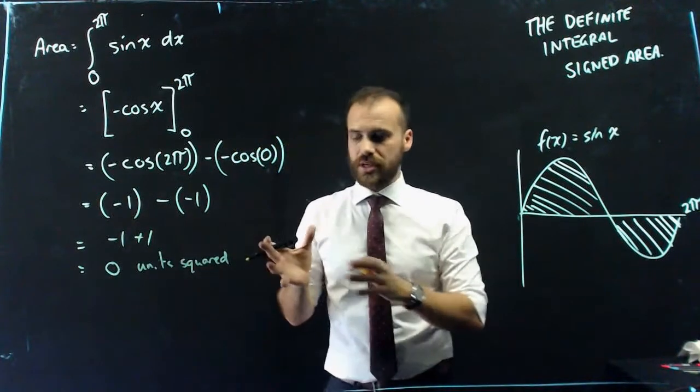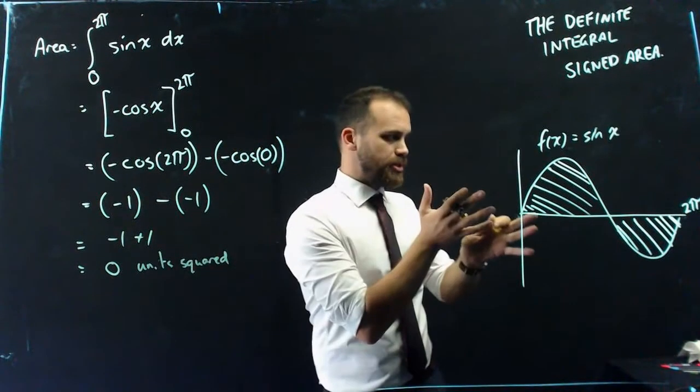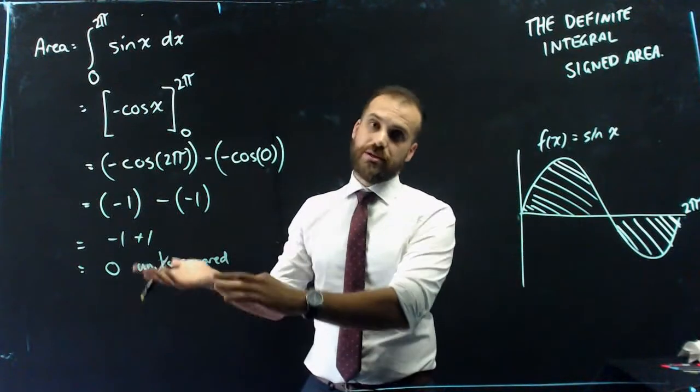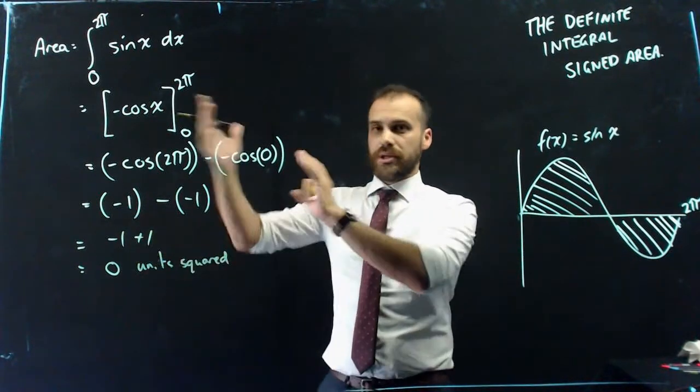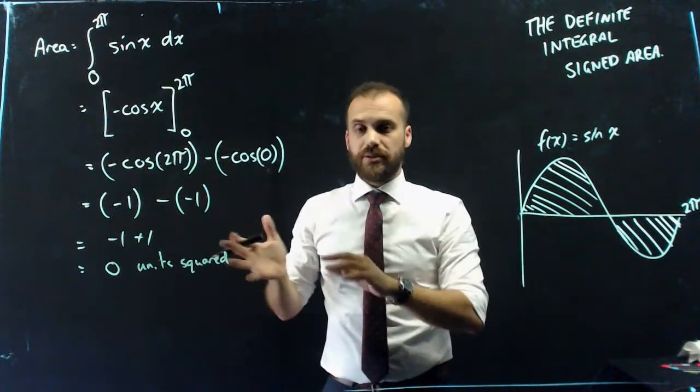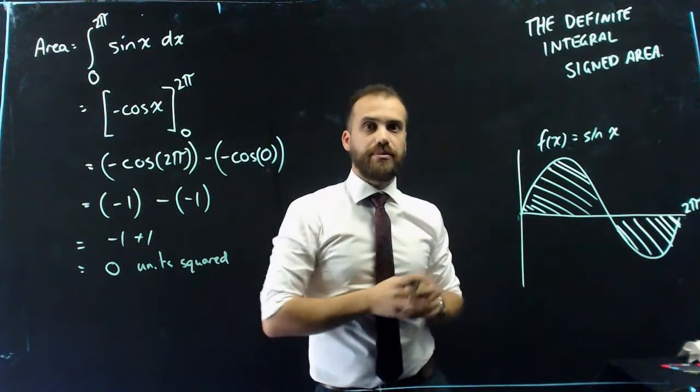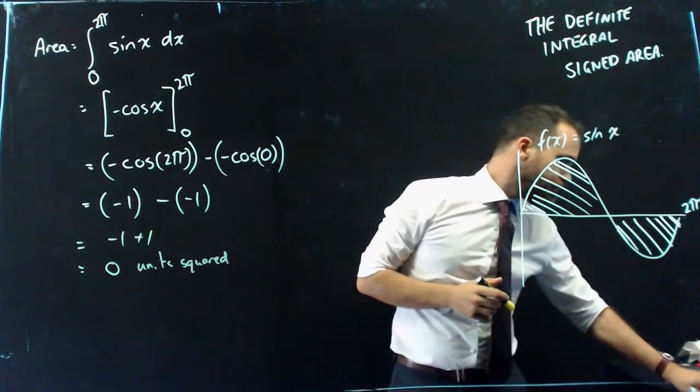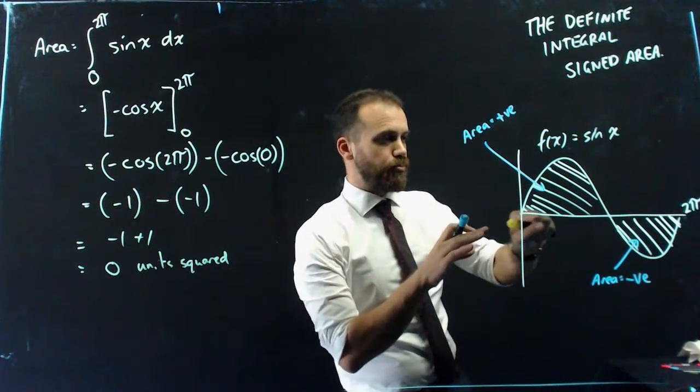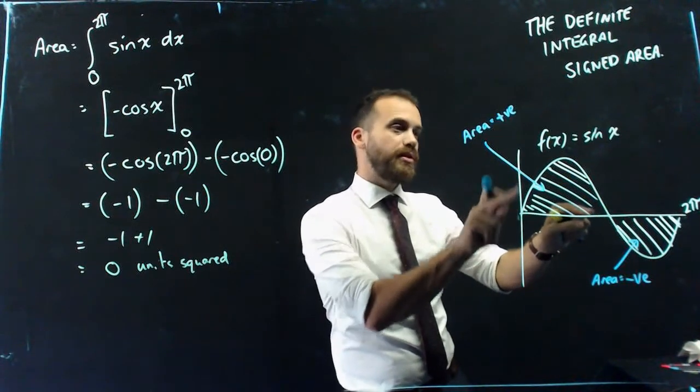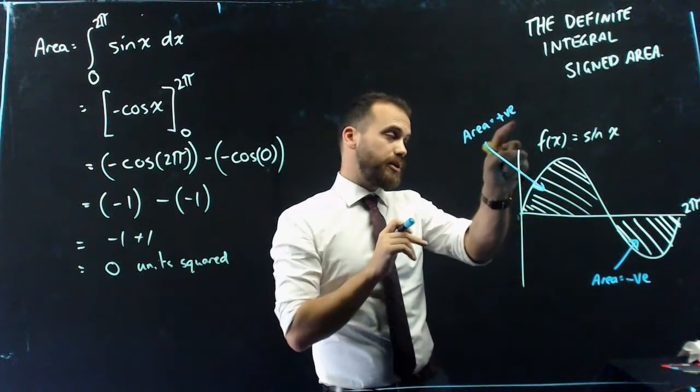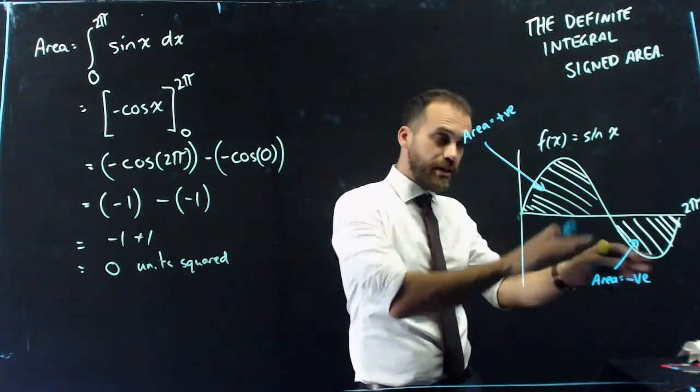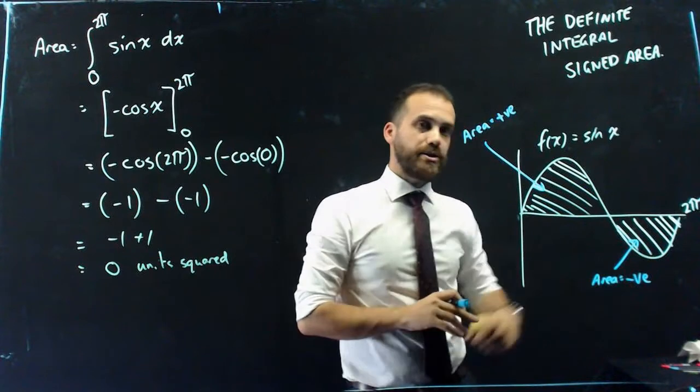Which is of course nonsense, because I can see area here, so there's some amount, some amount greater than 0. So my thing that I've done has let me down. Why has this definite integral let me down? It's because of signed area. Simply put, any area above the x-axis, or between the function and the top of the x-axis, is going to be positive. Any area underneath the x-axis is going to be negative.